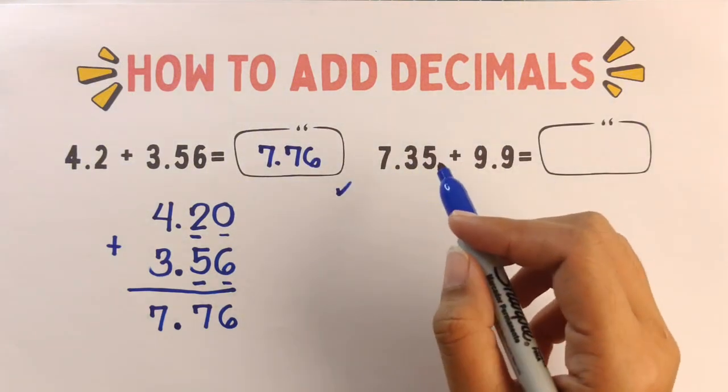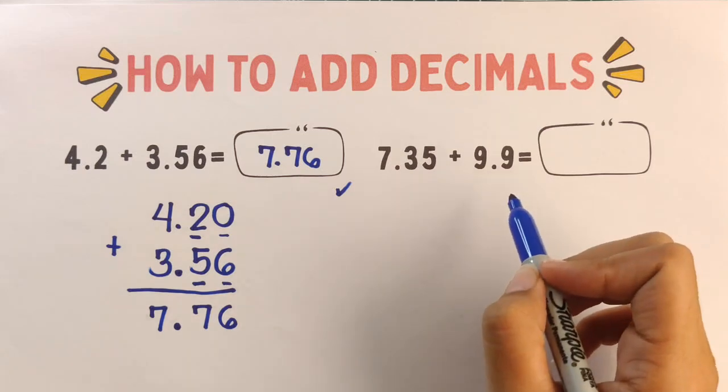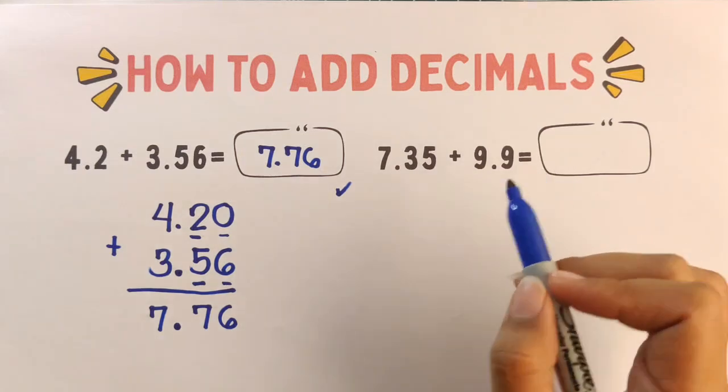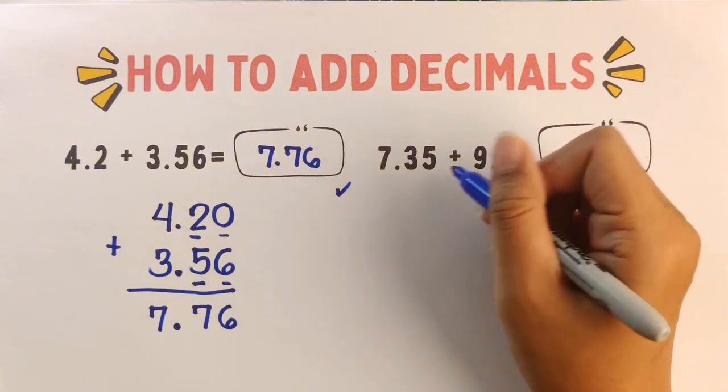Another example. Let's go step by step to solve it correctly. Step number one: line up the decimal points. We always start by lining up the decimal points vertically.